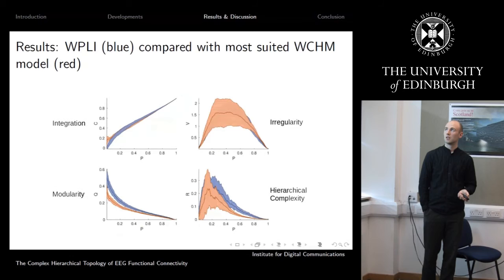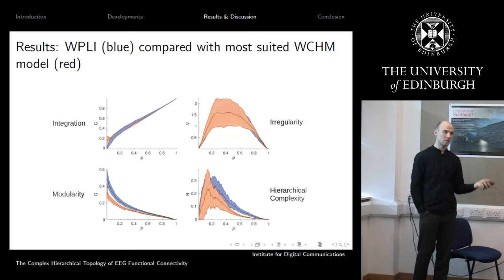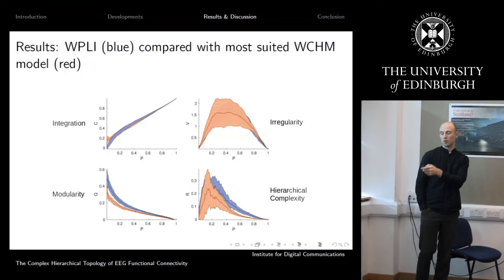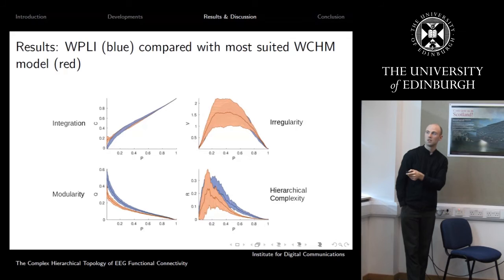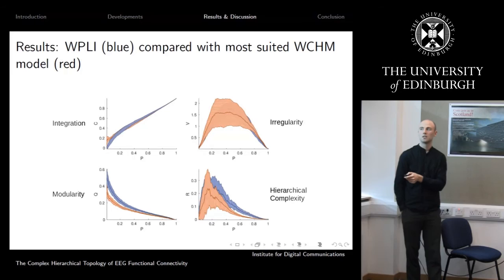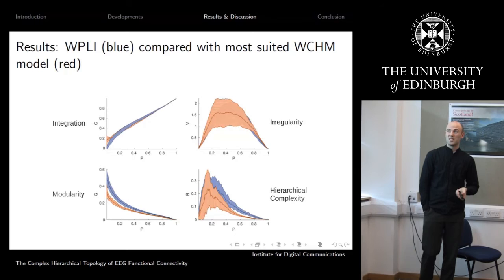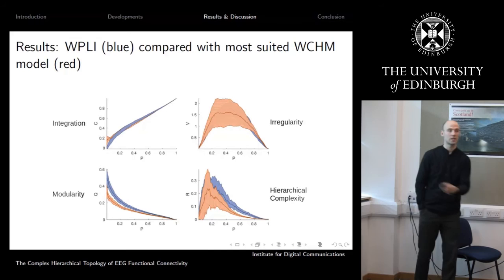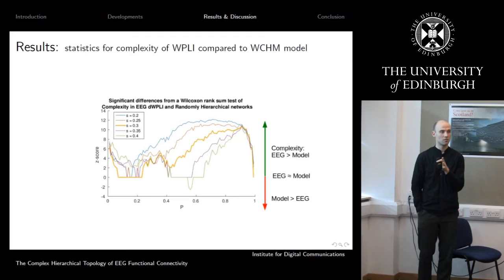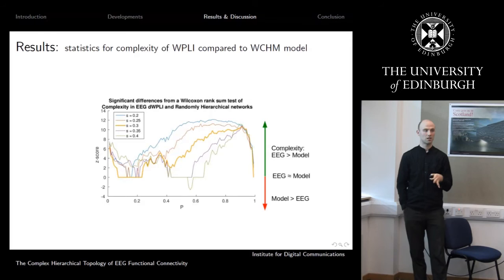Comparing the model with the EEG phase-based measure shows a very similar structure — the curves behave quite similarly — though there is a clear difference in modularity throughout the whole curve. Importantly, no model we have is more hierarchically complex than the EEG. The EEG is actually more hierarchically complex than the model specifically designed to target hierarchical complexity, which is a very interesting result. A Wilcoxon test comparing populations of the model and EEG networks confirms that the most complex model variant is only as good as the EEG and never better.